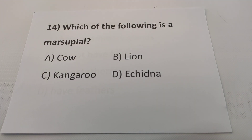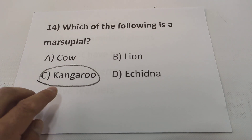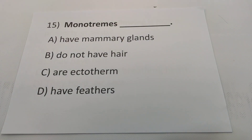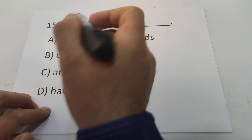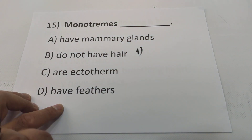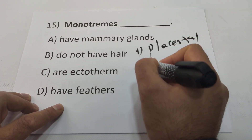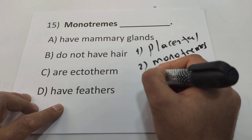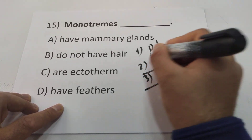Question fourteen: which of the following is a marsupial? Marsupials — kangaroo! Kangaroos have a pocket in front and feed their young inside it. Question fifteen: monotremes — remember, there are three kinds of mammals: placental mammals, monotremes, and marsupials.